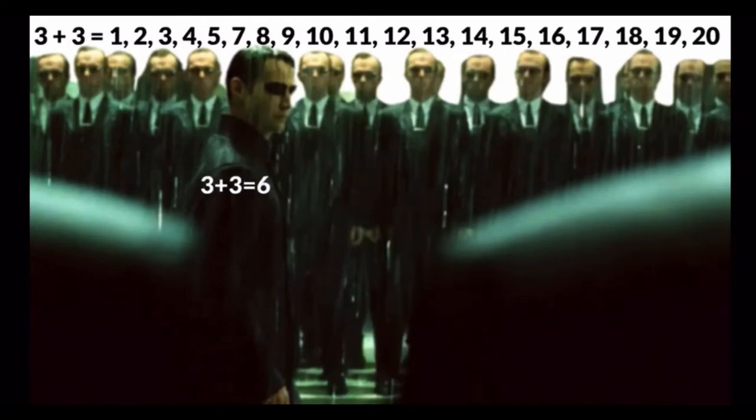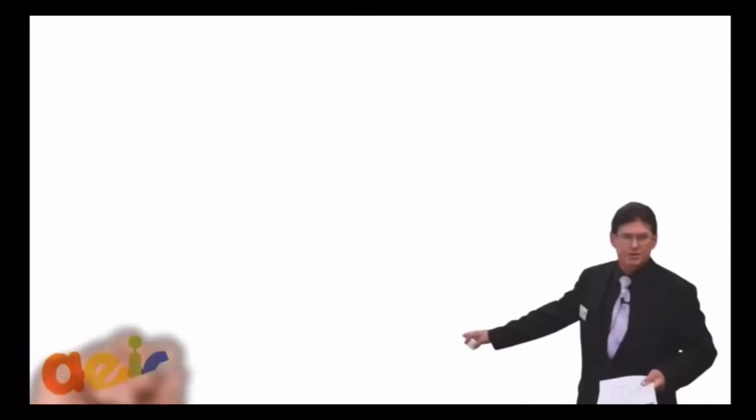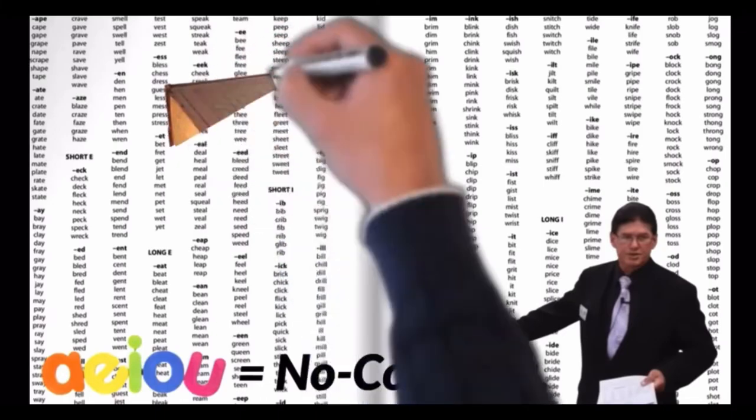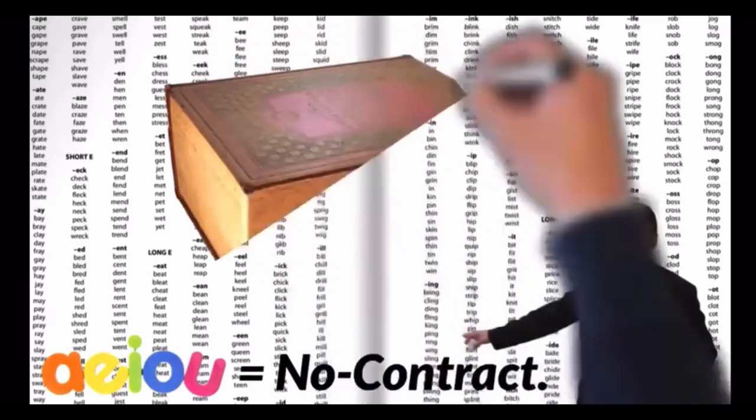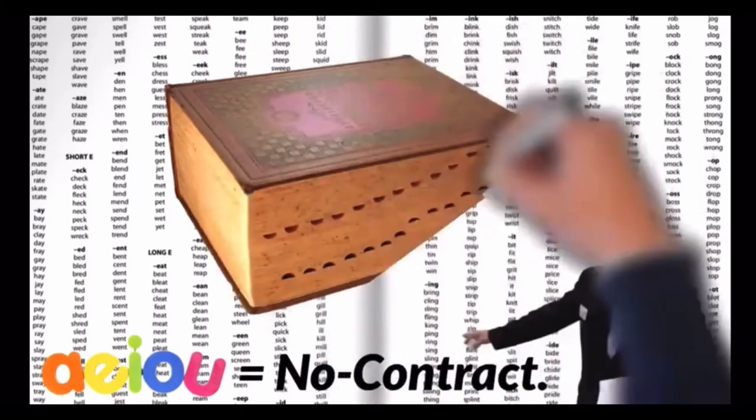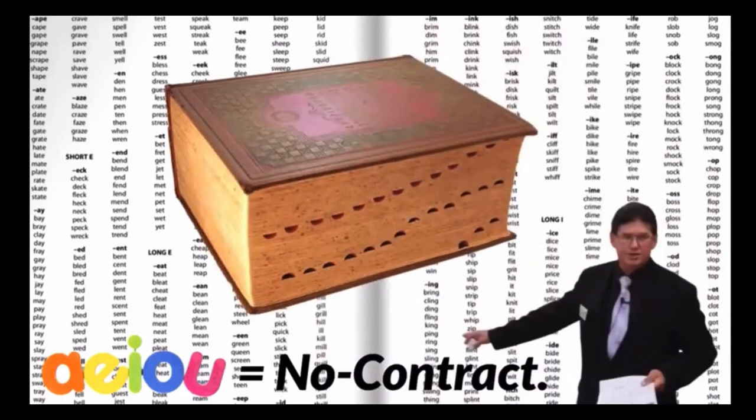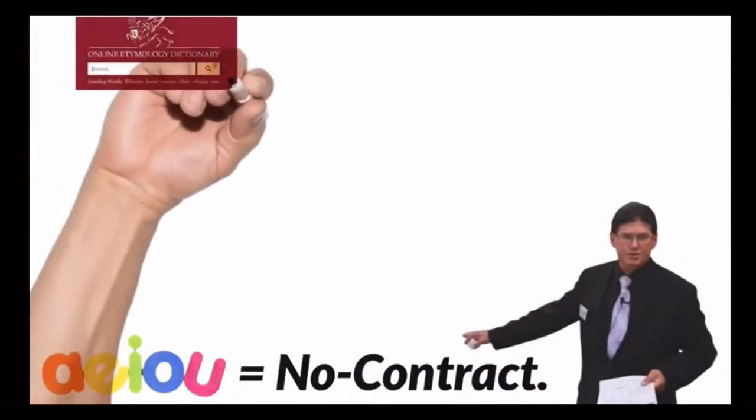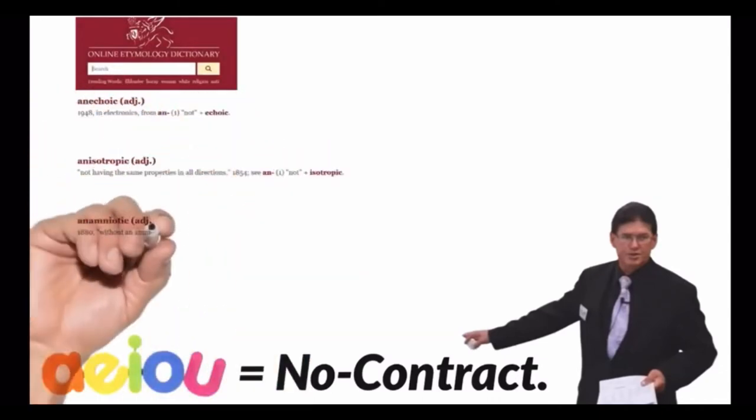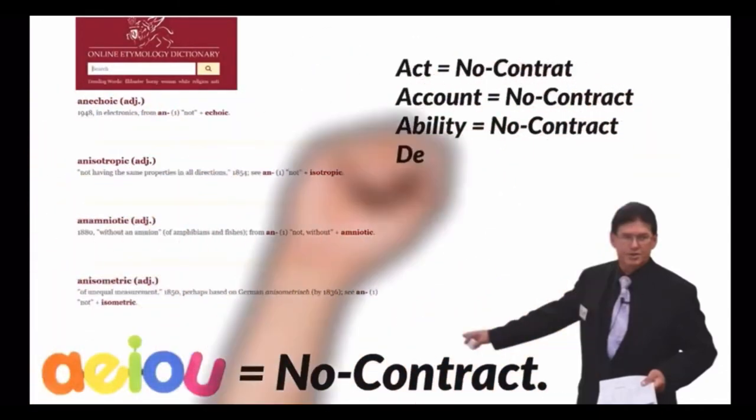All words that start with a vowel, A, E, I, O, and U, are followed by two consonants, means no contract. You're going to say, where do I find that rule? Look up every word in the dictionary. Get yourself a nice 8-inch-thick Webster's Unabridged Dictionary and look up every word that starts with a vowel and two consonants. And all the synonyms that reflect that word, and you will find a no contract, a negative condition of state for every single word.